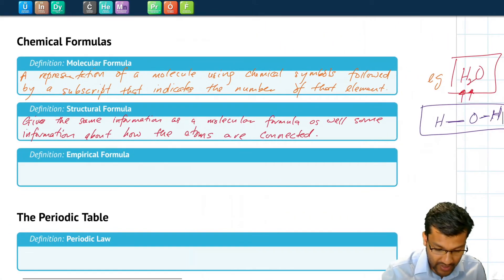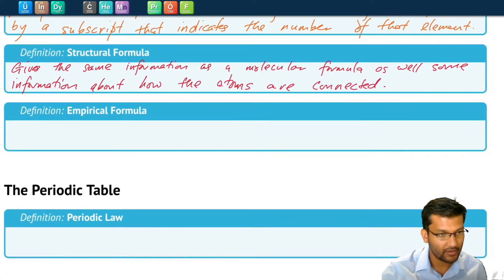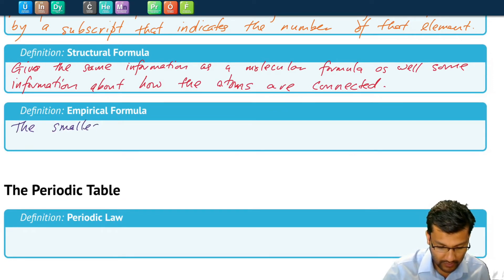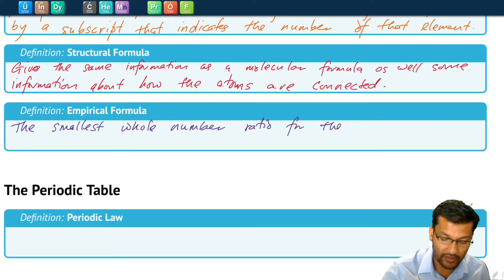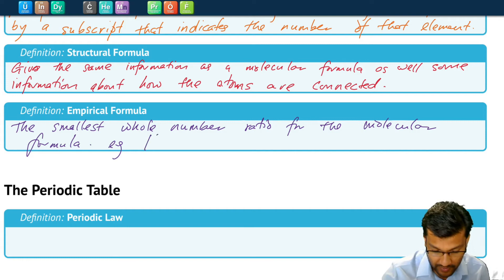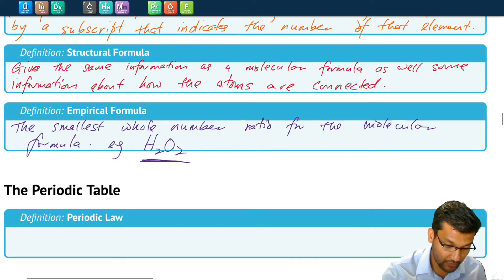And an empirical formula is simply the smallest whole number ratio, whole number ratio for the molecular formula. And for this let's look at hydrogen peroxide which has formula H2O2. The smallest whole number ratios for all of these elements would be just one. So actually the empirical formula for hydrogen peroxide is just HO.